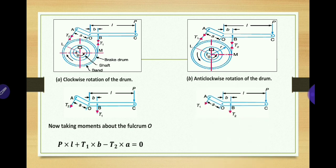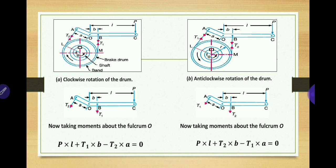Similarly, for anticlockwise rotation you can draw the free body diagram and take moments at fulcrum O. In simple band brake, only one point besides the fulcrum exists, so the moment equation has only T1 or T2. But in the differential band brake, the moment equation contains both T1 and T2. So you get one equation from moments and another from T1 upon T2 equals e raised to mu theta, then solve these two equations simultaneously to find T1 and T2.